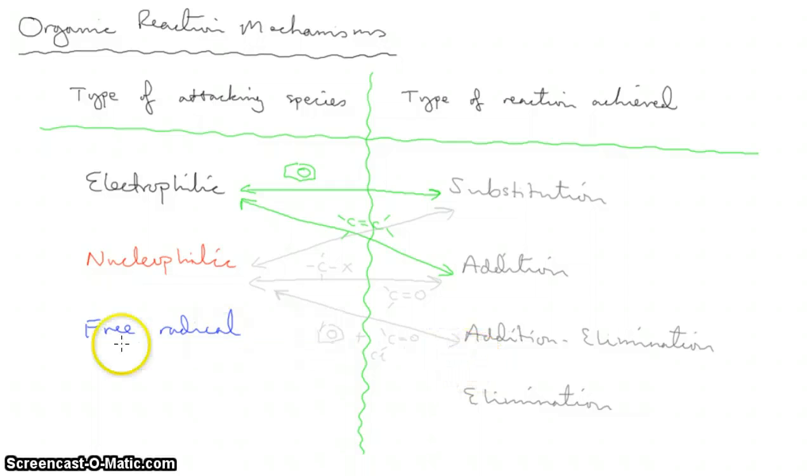Free radical reaction is only—at A-level anyway—only a substitution. This is your alkane with a halogen with UV light.